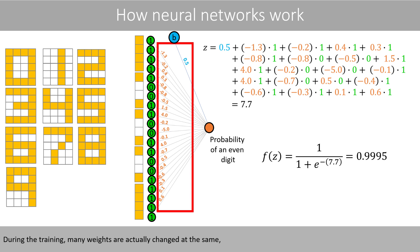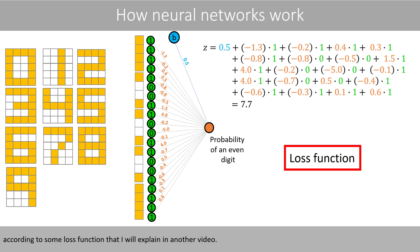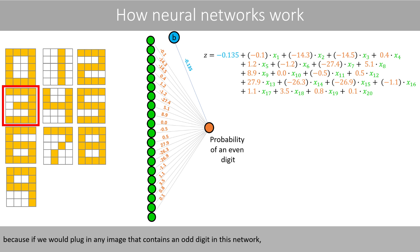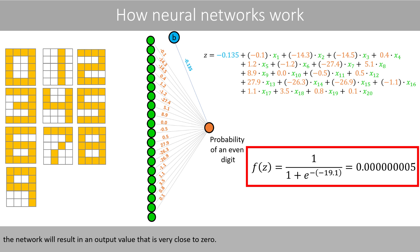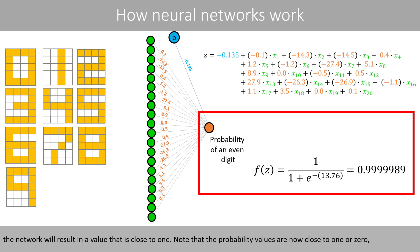During the training, many weights are actually changed at the same time, so that the images with an even digit result in probabilities close to 1, whereas the images with an odd digit result in probabilities close to 0, according to some loss function that will be explained in another video. If we let the network train on this data, which means that it will change the weights thousands of times, it might end up with the following optimized values. Because if we plug in any image that contains an odd digit, the network will result in an output value very close to 0, and if we plug in any image with an even digit, the network will result in a value close to 1.